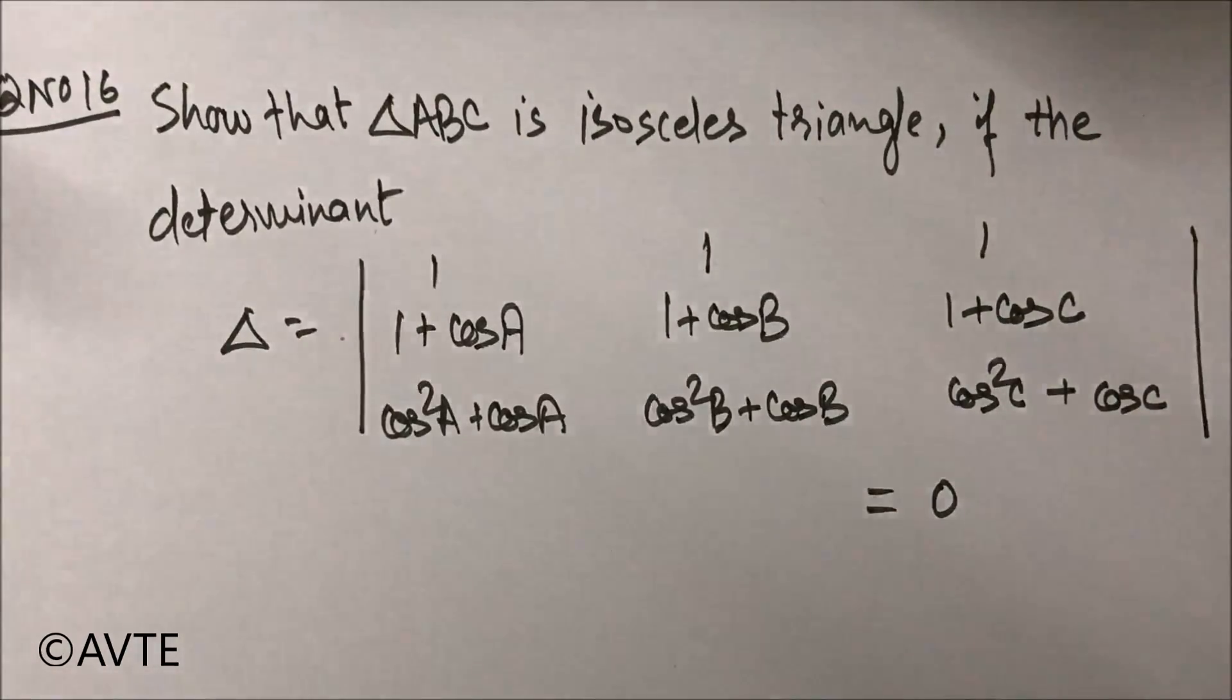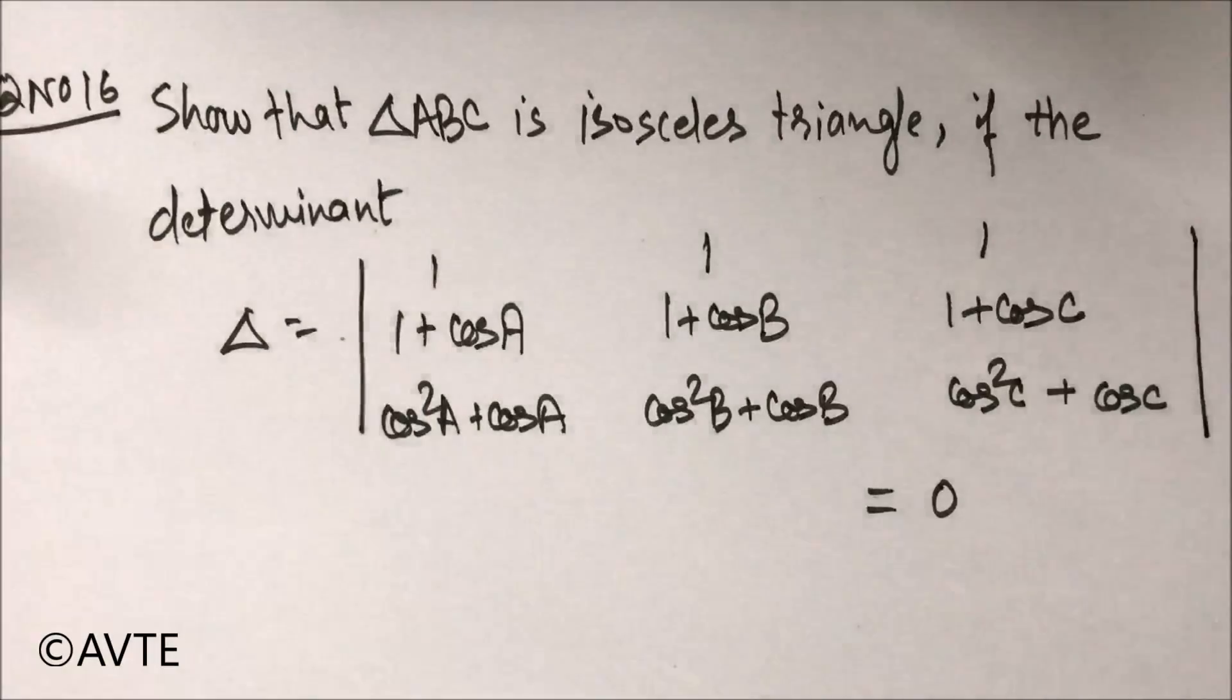So we can feel lucky because the first row is one one one and we can make two consecutive rows zero. So the operation could be C1 goes to C1 minus C3 and C2 goes to C2 minus C3. So you can pause the video, get your copy and pen, try that on your own or we can solve it together.